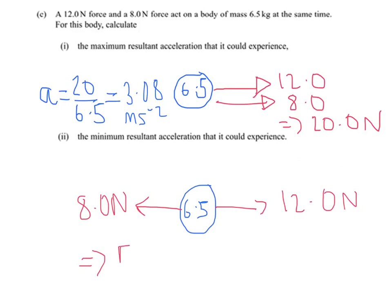So your resultant force would be 12 minus 8 equals 4 newtons. So in this case, again, just for illustrative purposes, we're going to do, so your acceleration would be 4 divided by 6.5, which equals 0.62 meters per second squared.